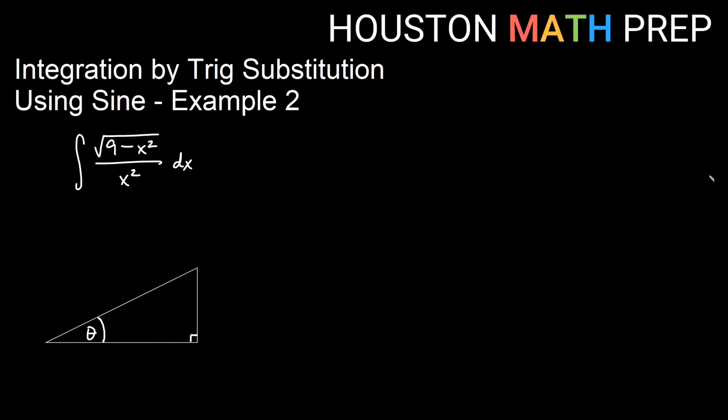Welcome back everyone to our second example video for sine trig substitution. Here we have the integral of the square root of 9 minus x squared, and that's divided by x squared, dx.